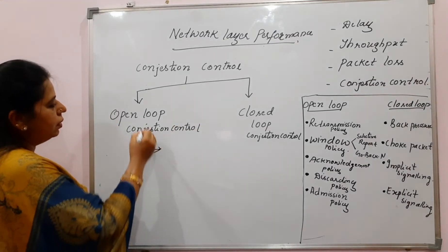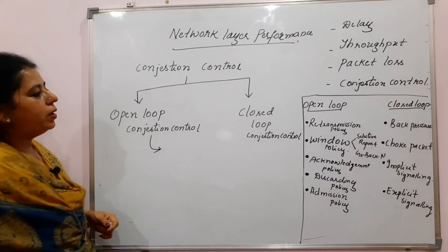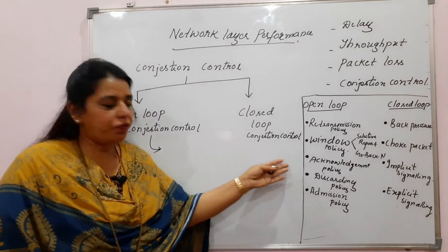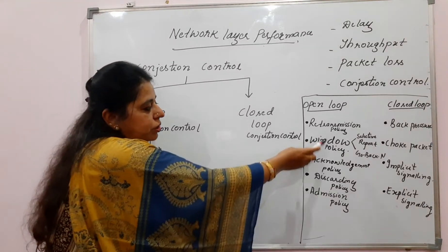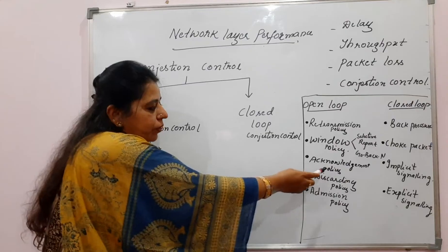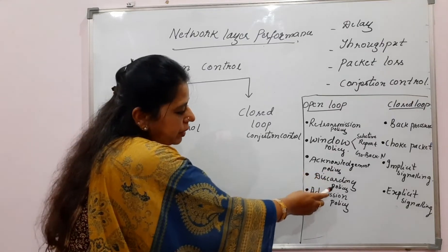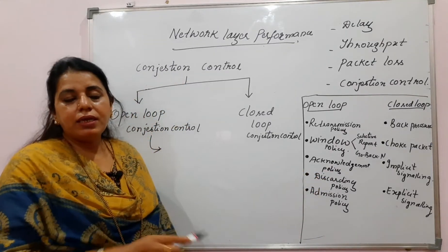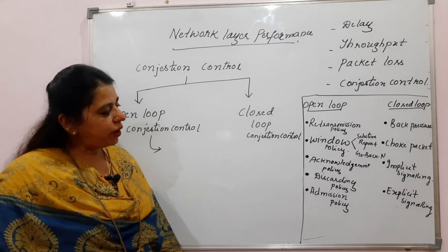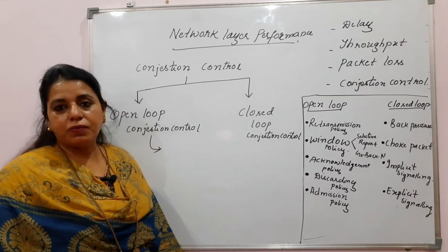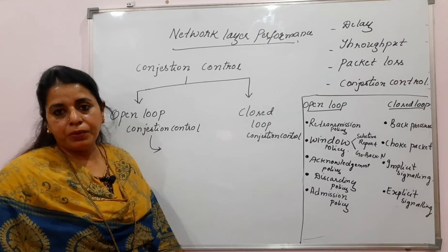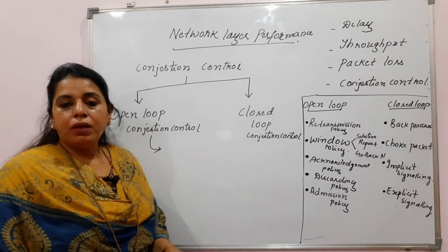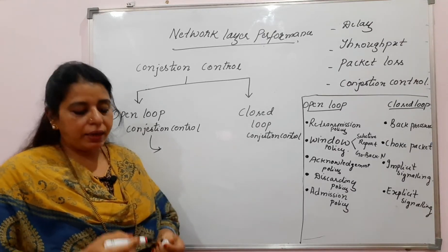For open loop congestion control, we have five different policies: retransmission policy, window policy, acknowledgement policy, discarding policy, and admission policy. Let us go through each one of them.